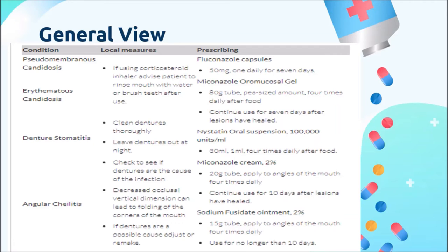Denture-related stomatitis is the most common condition affecting removable denture wearers, and Candida albicans is the most frequent pathogenic agent. Systemic antifungal treatment is indicated when recurrences are frequent. My friends will explain the drugs in the table in more detail.